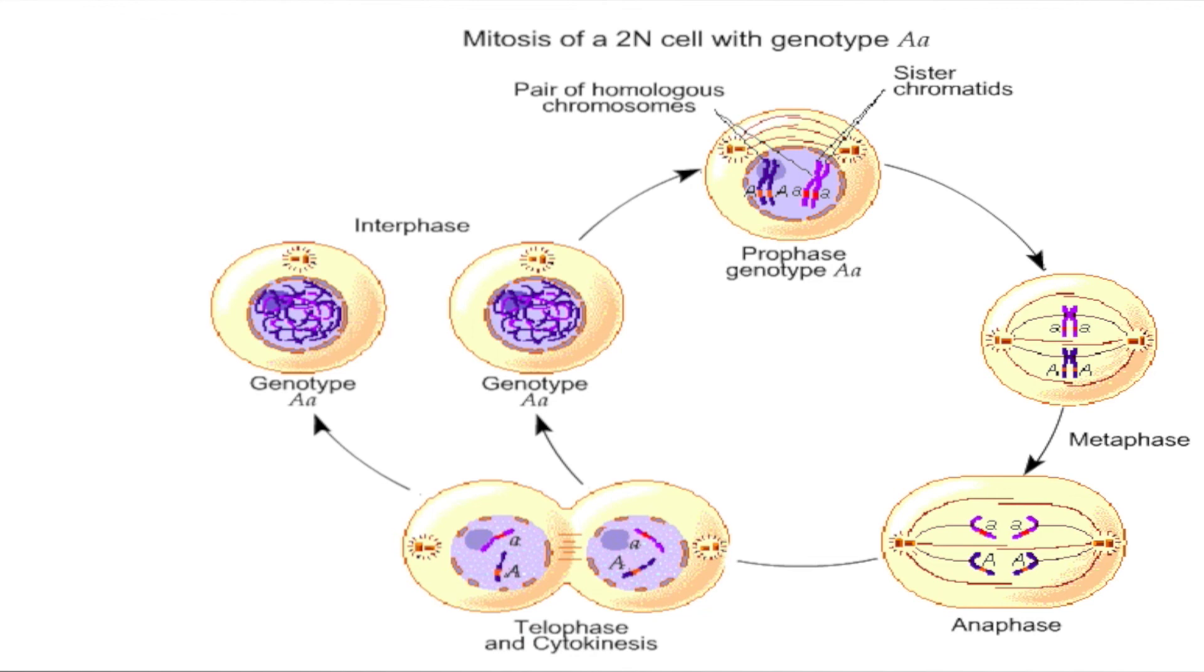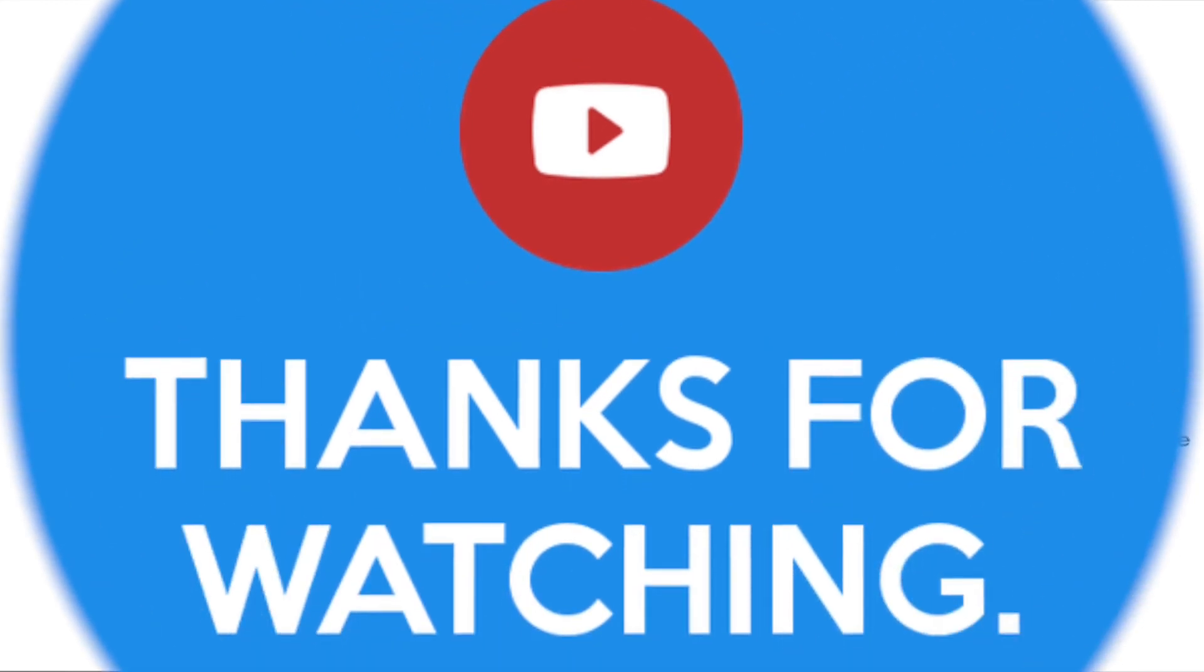Illustrating this in the diagram is mitosis of a diploid cell with the genotype Aa.